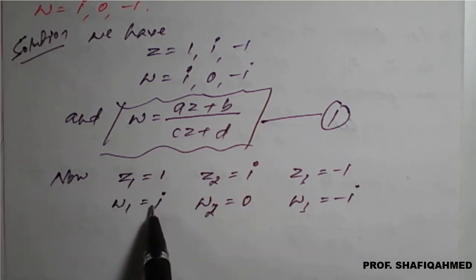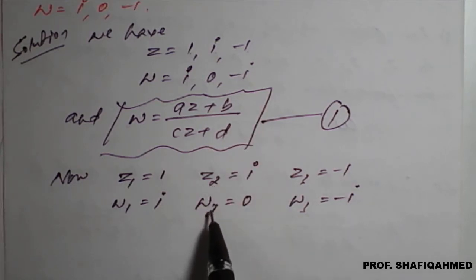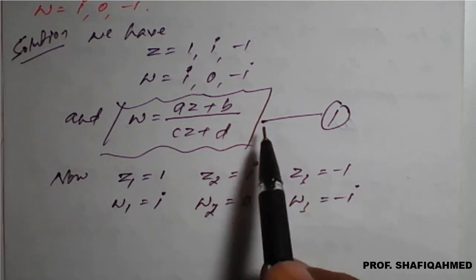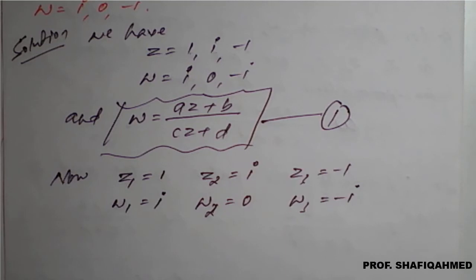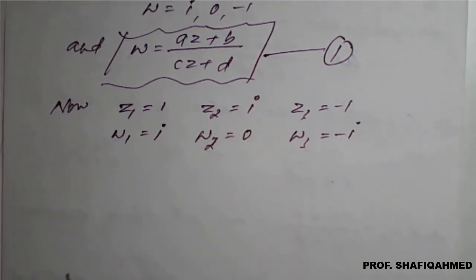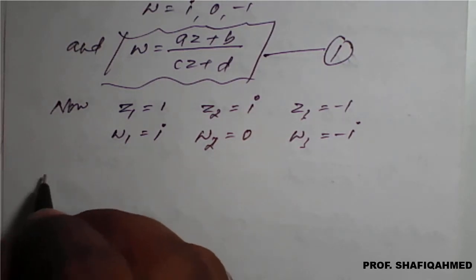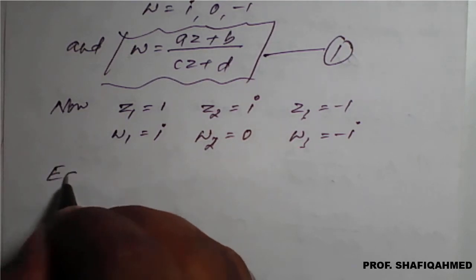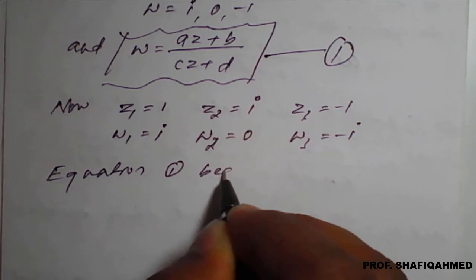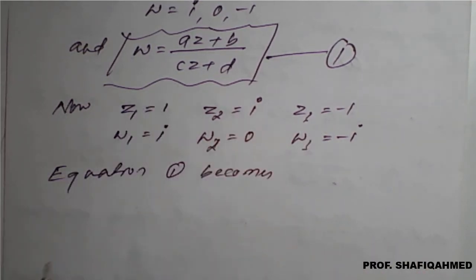We'll take each pair — z1, w1 then z2, w2 then z3, w3 — and apply equation number 1 to generate three equations. By solving those equations we can get the complex constants a, b, c, and d.